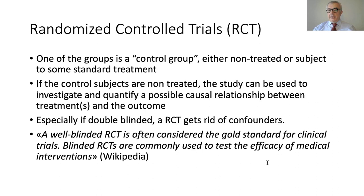A well-blinded randomized controlled trial is considered the gold standard for clinical trials and is commonly used to establish cause-effect relationships. If you want to establish causality from observational data instead, it is much more difficult and requires studying causal diagrams. For that, I recommend reading Pearl's book The Book of Why, which discusses this issue quite deeply.